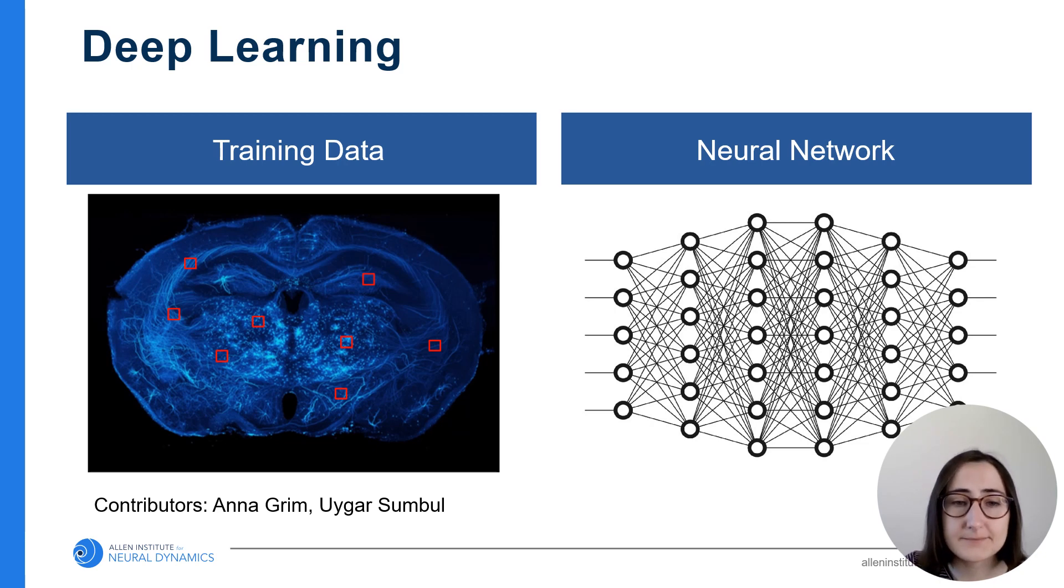We train our neural network by sampling small regions around the brain and manually tracing the neurons in each region. We feed these examples into the neural network, which learns from them and can then automatically trace neurons for us.